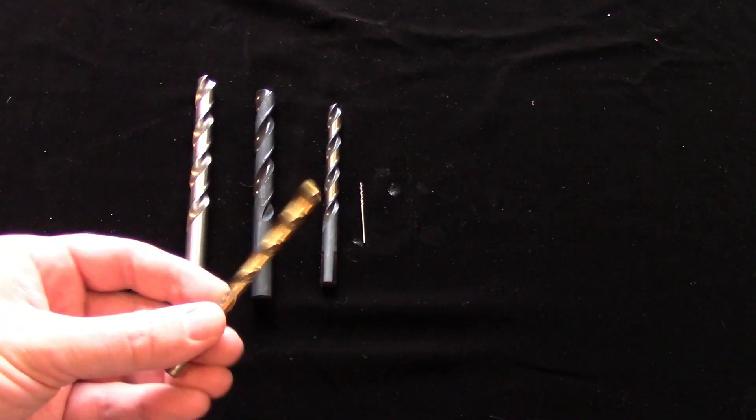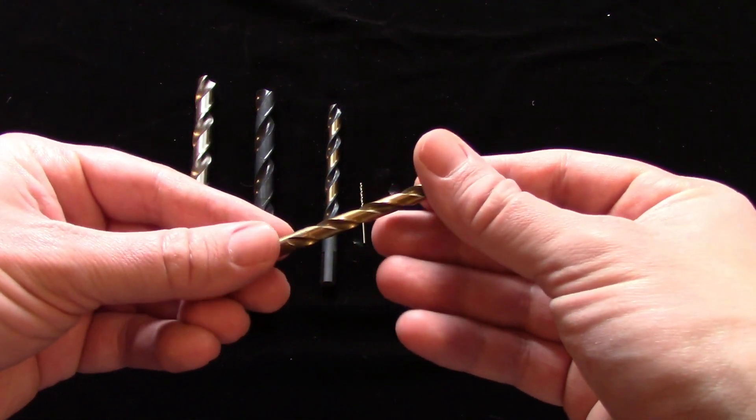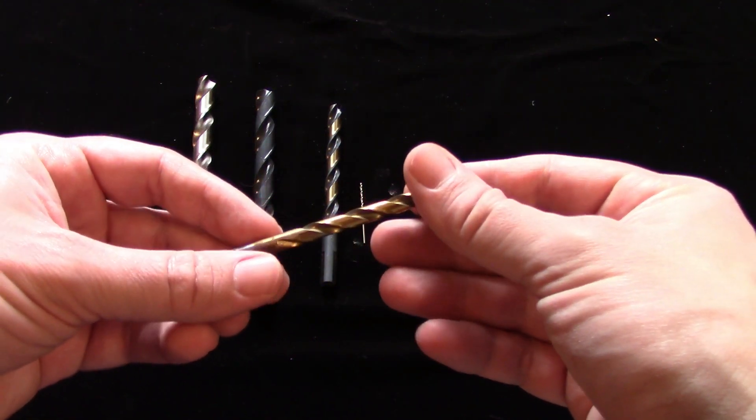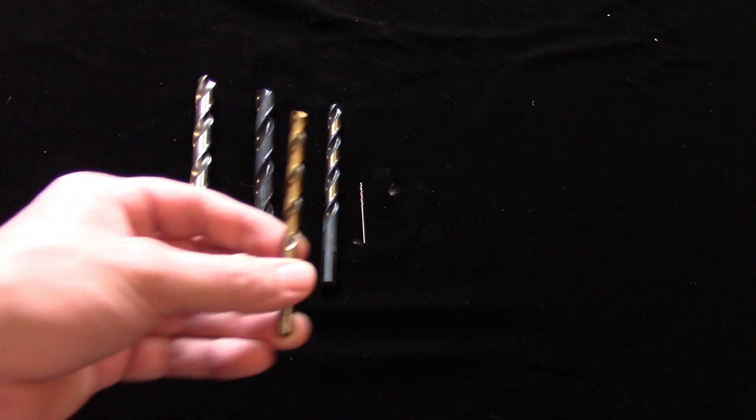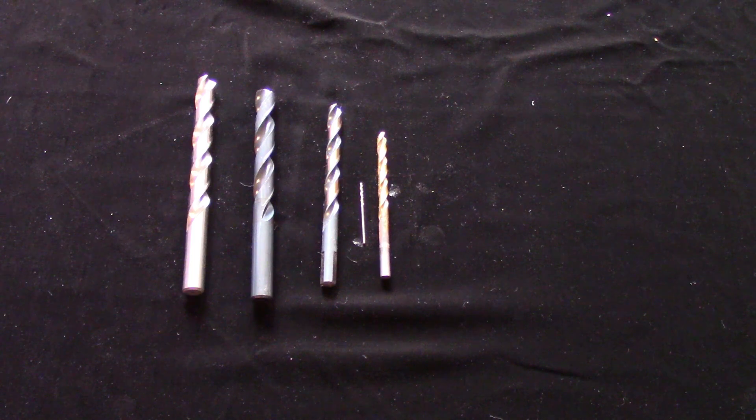Titanium nitride is a gold-colored coating that is regularly seen on cheap cutting tools sold in big-box stores, so it's often seen as gimmicky. But it actually allows for a 25 to 30 percent faster cutting speed over an uncoated tool.